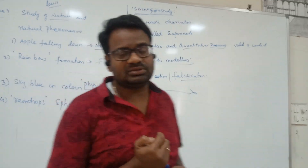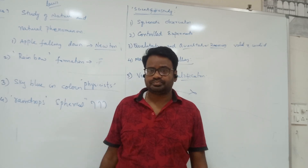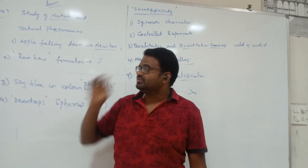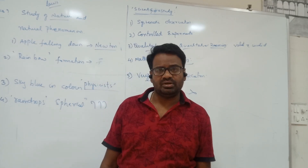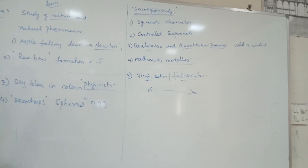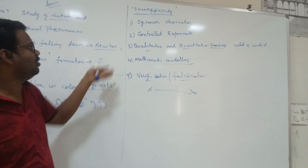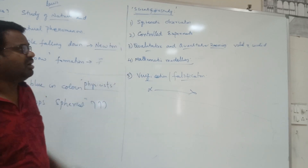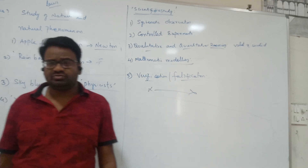So far, under the chapter of Physical World, we have learnt two important things. First: what is physics? Physics is that branch of science which deals with the laws of nature and the study of natural phenomena, such as rainbow formation, the sky appearing blue, or an apple falling from a tree. Second: scientists and physicists follow a method called scientific study, which involves five important steps — systematic observation, controlled experiments, qualitative and quantitative reasoning, mathematical modeling, and verification of the truth.